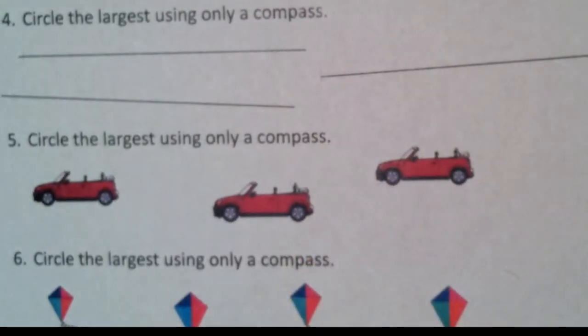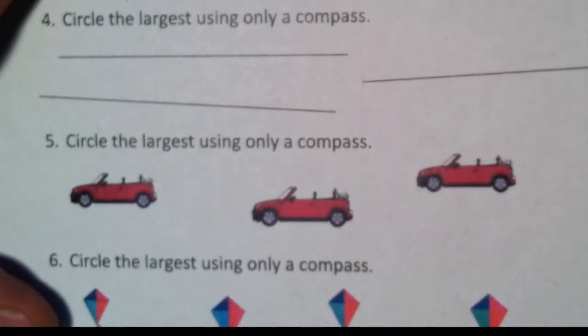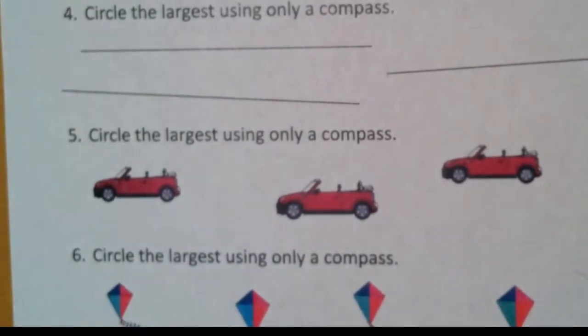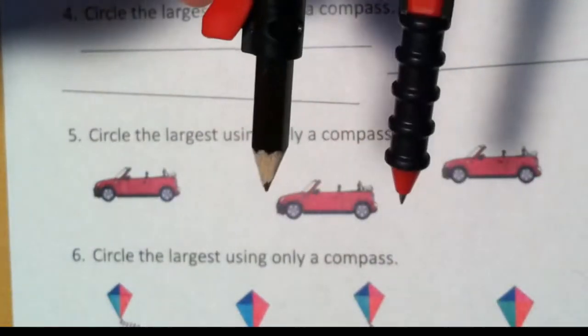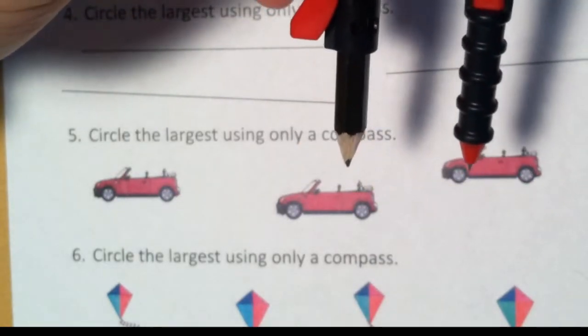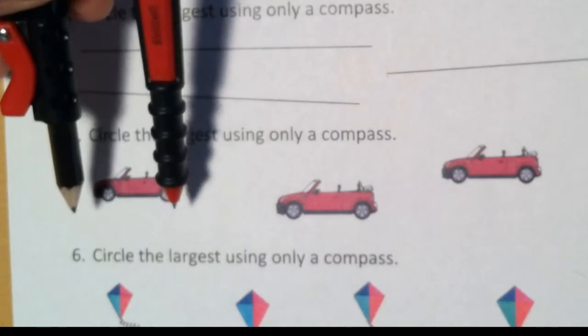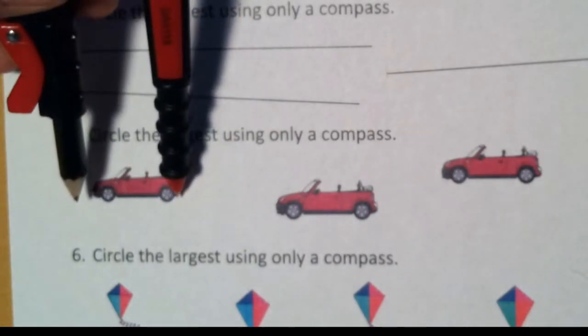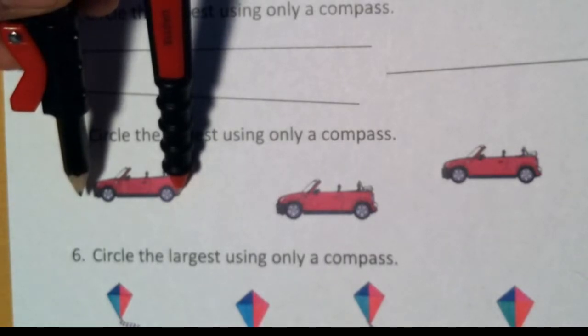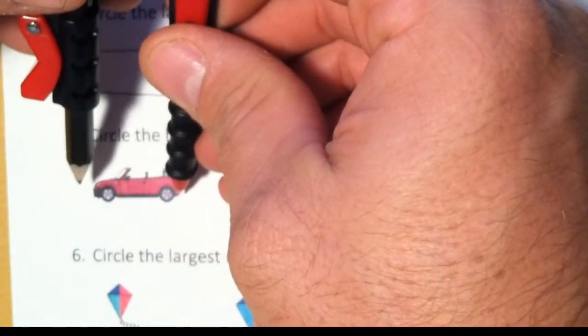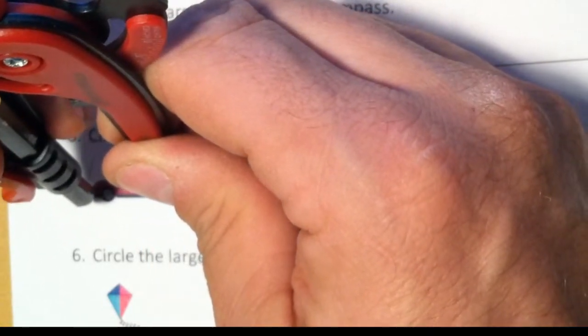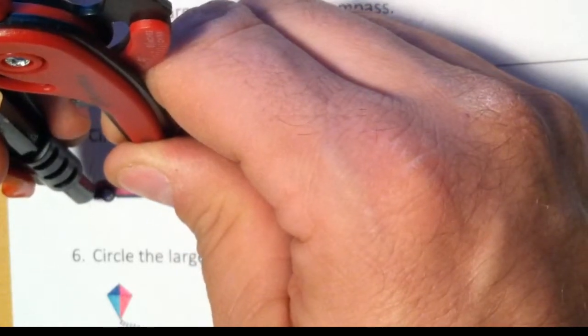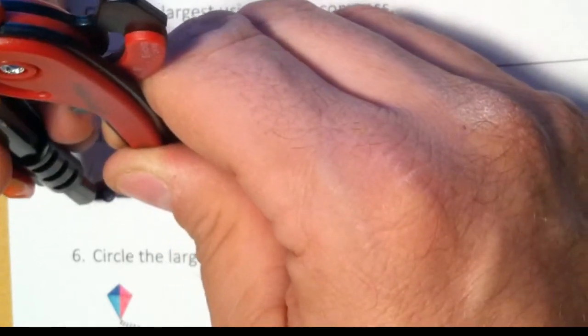Now, still using a compass, but now we're not using line segments. We're using pictures. Same basic concept. I'm going to use my compass, open and close it to see which one is the largest. But the difference here is I want to pick two points that I can find on all three objects. Here I'm going to choose the very back of the bumper right here where there's another line, and I'm going to go to the front of the bumper. So I put the pointy end here and I make a mark. Oh, didn't quite make it. I closed my compass a little bit. There, I've got some just barely touching that front bumper.